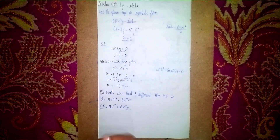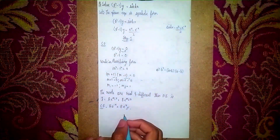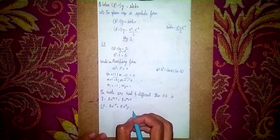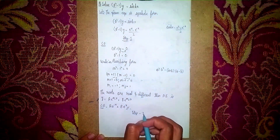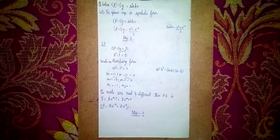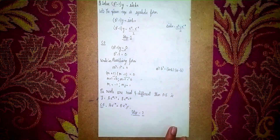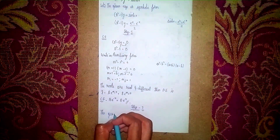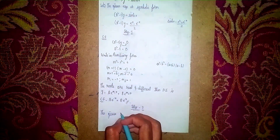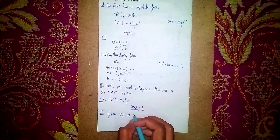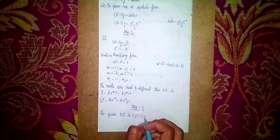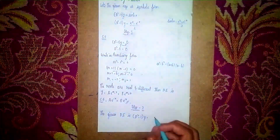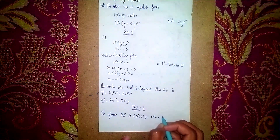Step 2 is to find the particular integral. We write the given differential equation: (D² - 1) y = (e^x - e^(-x)) / 2. This is in the form f(D) y = X.